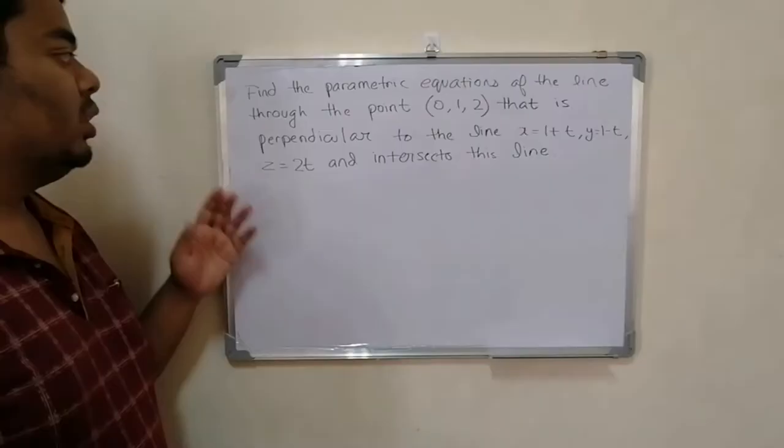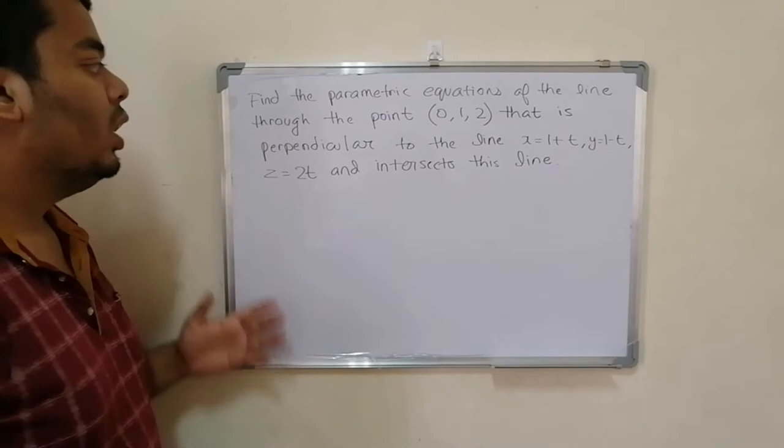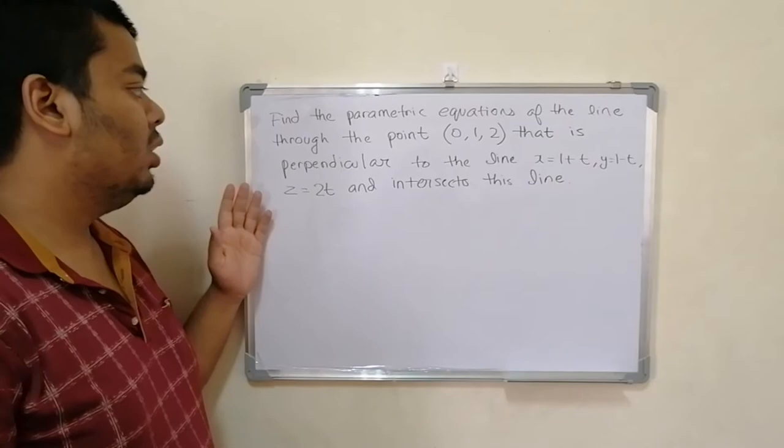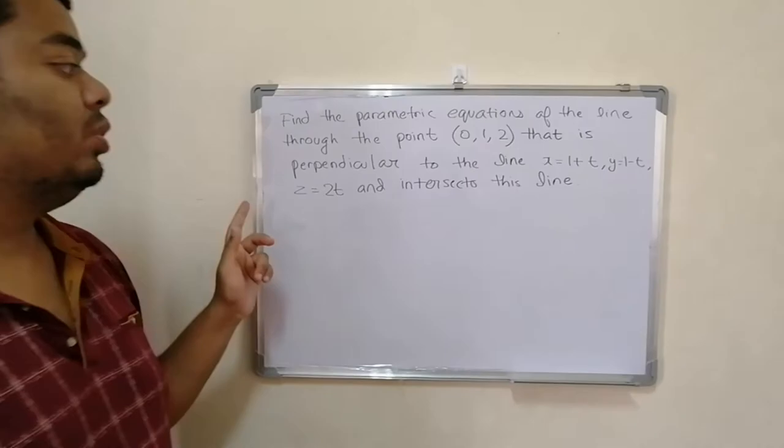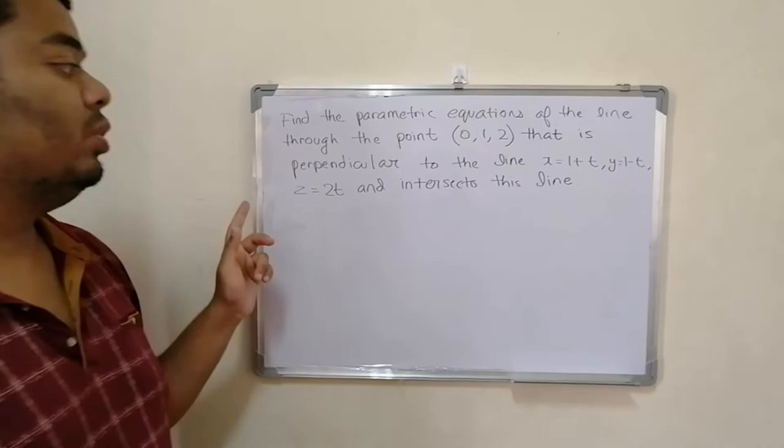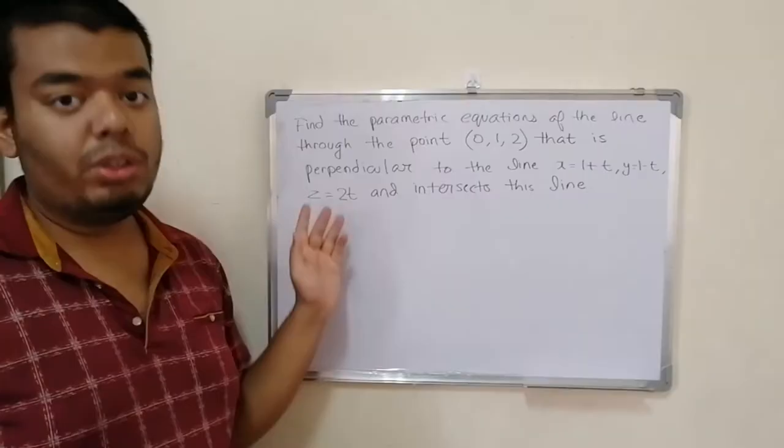This is our second question. Let's read it first: find the parametric equations of the line through the point (0, 1, 2) that is perpendicular to the line x = 1+t, y = 1-t, z = 2t, and also intersects this line.